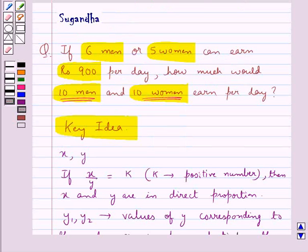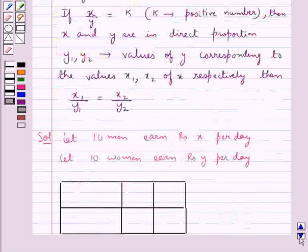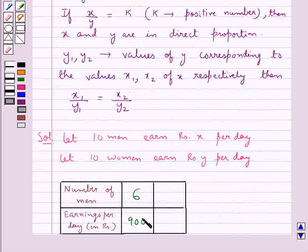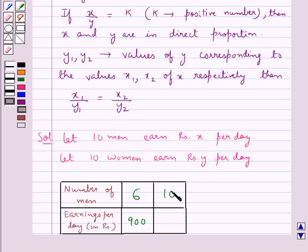In the question we have that 6 men earn Rs. 900 per day. So when the number of men is 6, their earnings per day is Rs. 900. And we need to find the earnings per day of 10 men. So when the number of men is 10, their earnings per day would be X, as we have assumed.